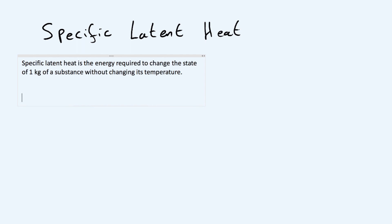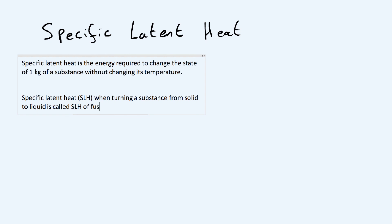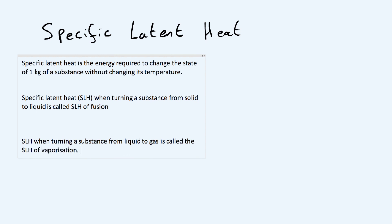The specific latent heat is not necessarily the same when going from solid to liquid as from liquid to gas. The specific latent heat when turning a substance from solid to liquid is called the specific latent heat of fusion. The specific latent heat when turning a substance from liquid to gas is called the specific latent heat of vaporization. Those two are separate — one is between solids and liquids, the other between liquids and gases.